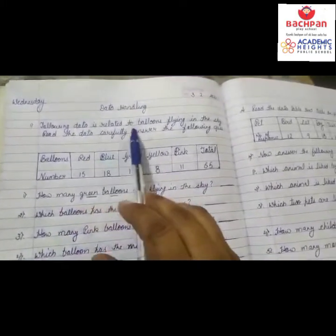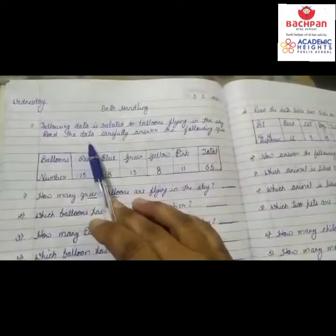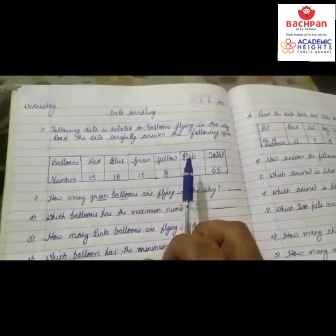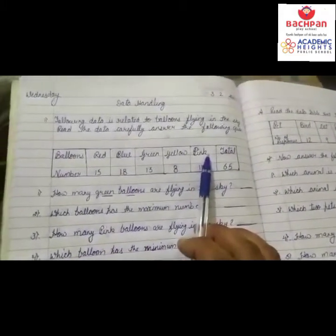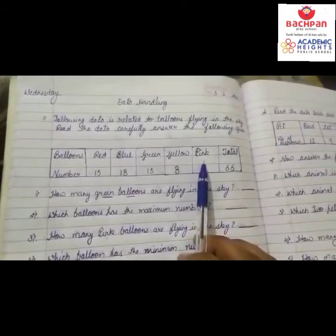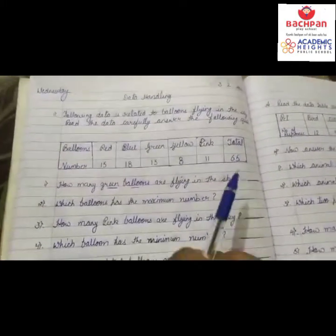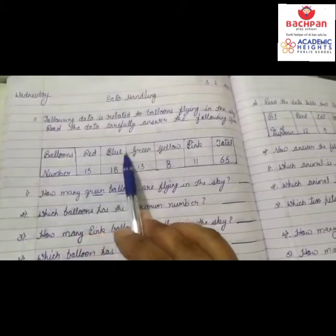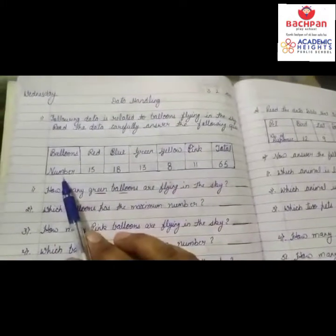Following data is related to balloons flying in the sky. Read the data carefully and answer the following questions. First of all, which is given on our table, we will read carefully. The balloons flying in the sky — balloons and number. Balloons are red, blue, green, yellow, pink, and the last one is total.